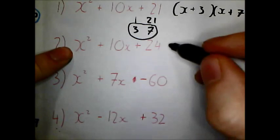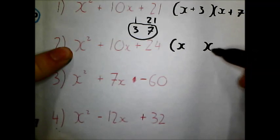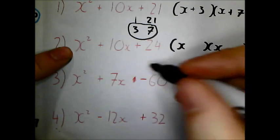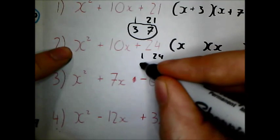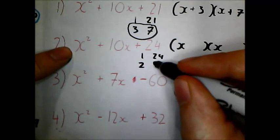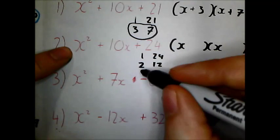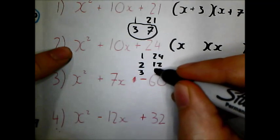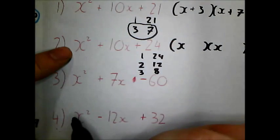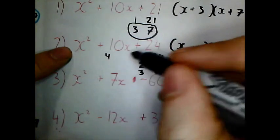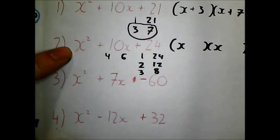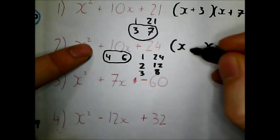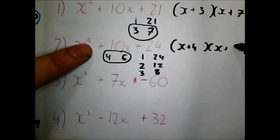This one. Put in my empty brackets with the x's. Let's look at the factors of 24. So that's 1 and 24. That's 2 and 12. That is 3 and 8. That's 4 and 6. And that's it. So I'm looking for the ones that add up to give 10. So that's 4 and 6. So plus 4 plus 6.